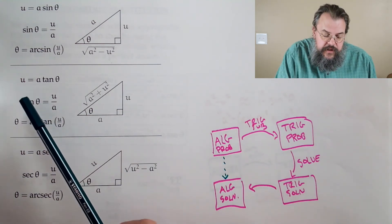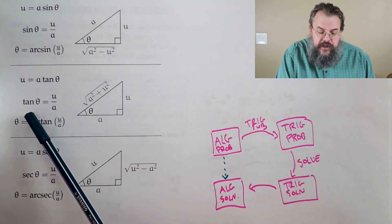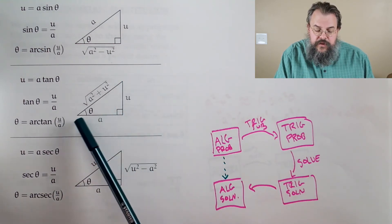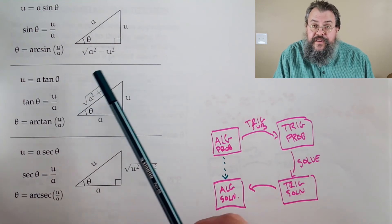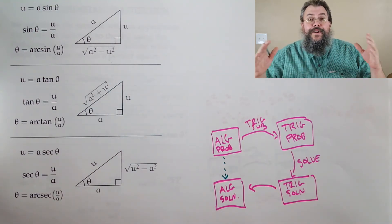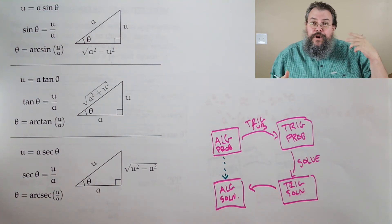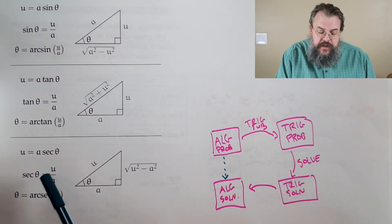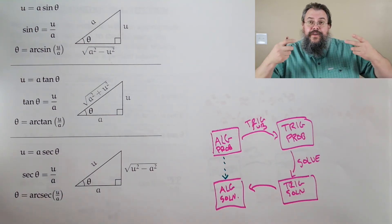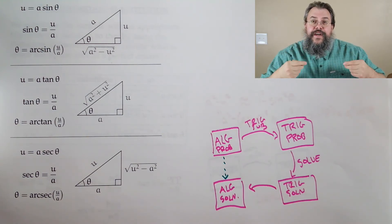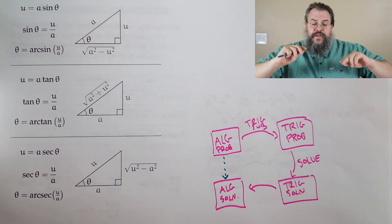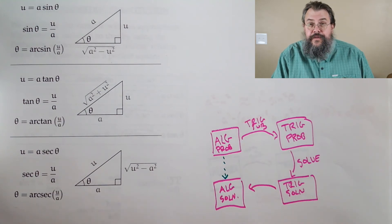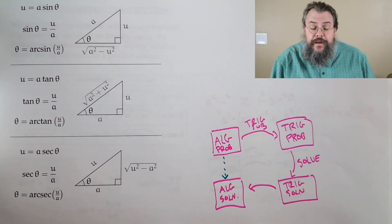If U equals A tan θ, then tangent θ equals U over A — tangent is opposite over adjacent. Pythagorean theorem gives the hypotenuse: the square root of A² plus U². No surprise — when we see A² plus U², we think tangent as our substitution. For secant: secant θ equals U over A, which is hypotenuse over adjacent (the flip of cosine). The missing side is the square root of U² minus A². Life is good.